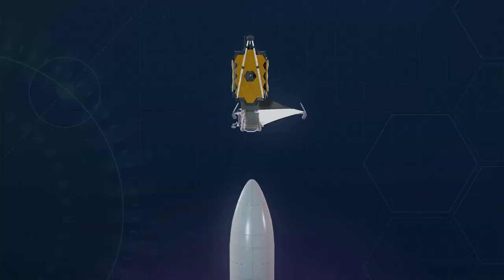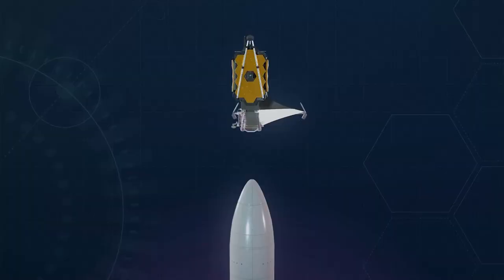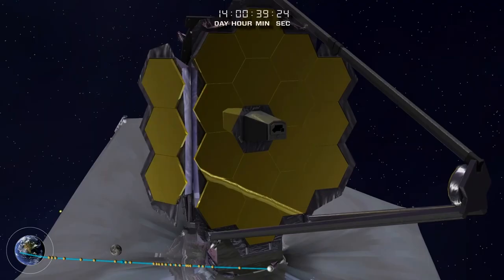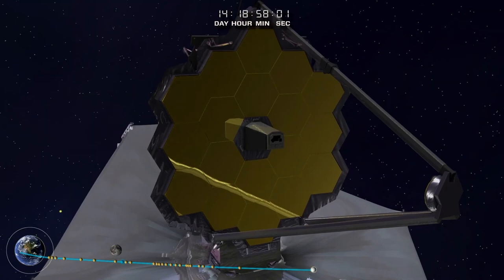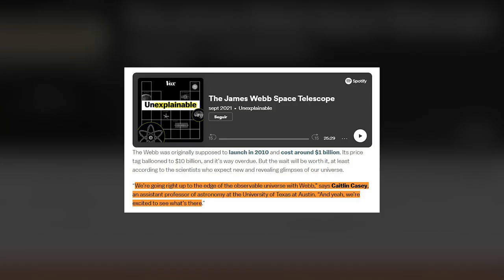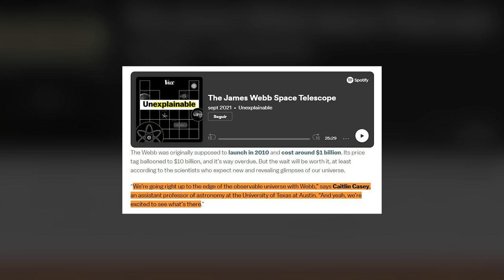The Webb was originally supposed to launch in 2010 and cost around $1 billion. Its price tag ballooned to $10 billion, and it's way overdue. But the wait will be worth it, at least according to the scientists who expect new and revealing glimpses of our universe. We're going right up to the edge of the observable universe with Webb, says Caitlin Casey, an assistant professor of astronomy at the University of Texas at Austin. And yeah, we're excited to see what's there.